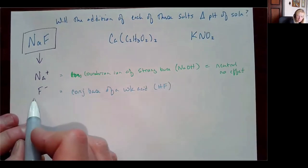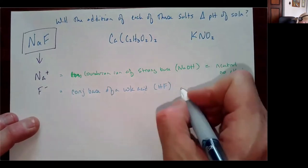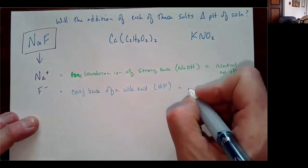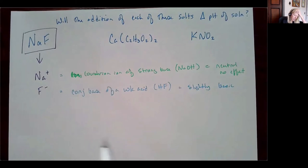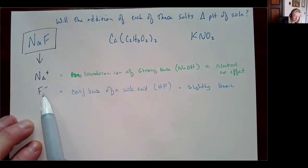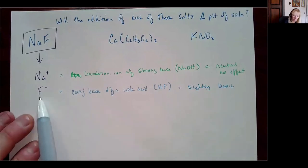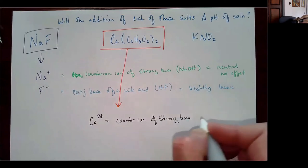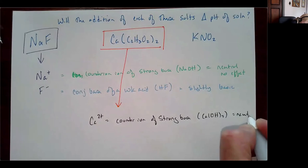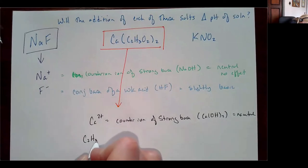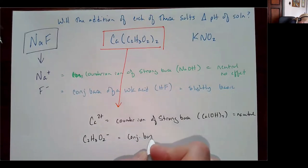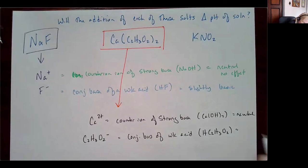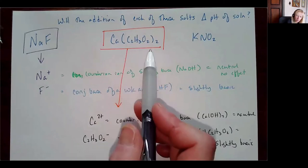To check whether an anion produces a weak acid, just add an H and see if it's one of the six strong acids — if it isn't, it's a weak acid conjugate base. Fluoride will pick up a proton from water and produce hydroxide, making the solution slightly basic. So sodium fluoride dissolved in water will have a pH above 7, driven by the fluoride ion.